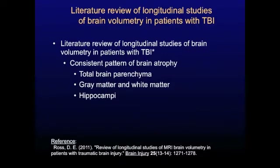These studies found a consistent pattern of brain atrophy. The most commonly used measure was total brain parenchyma — parenchyma means brain tissue as contrasted with the ventricles or cerebrospinal fluid spaces. Total brain parenchymal tissue was consistently found to be smaller in these studies and to get smaller over time. Gray matter, white matter regions, and hippocampi were all found to atrophy over time as well.